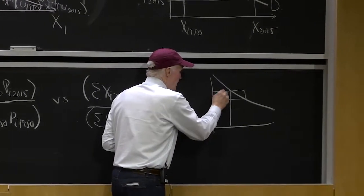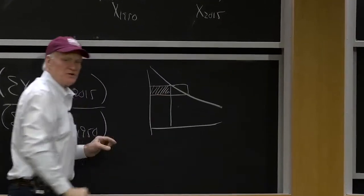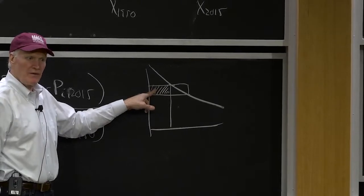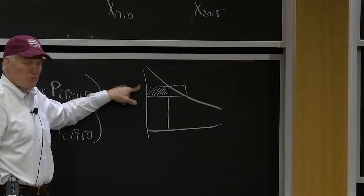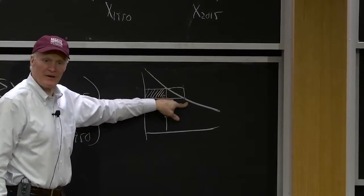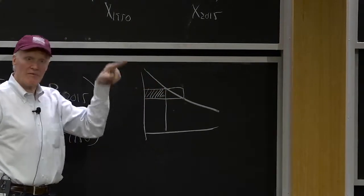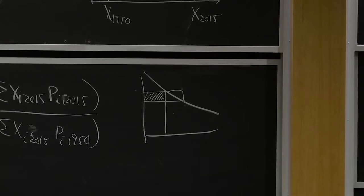So Laspeyres would only do that, would just do that little rectangle. The Paasche index would do the big rectangle. Fisher would do kind of like half of that rectangle. It would be kind of like approximating that triangle.